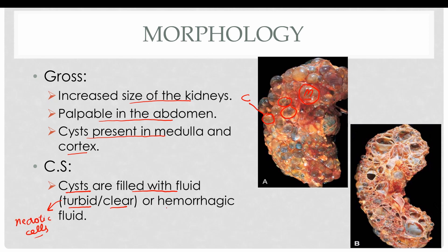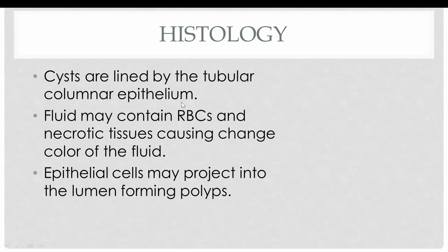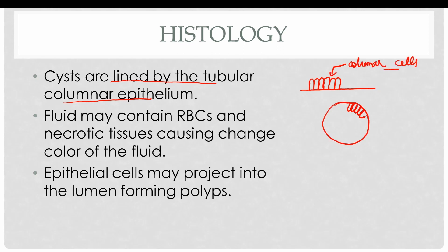Sometimes red blood cells are also present inside the cysts, making the fluid hemorrhagic — meaning tinted with blood. The cut section of the affected kidney shows multiple cysts in both the medullary and cortical regions, along with loss of renal parenchyma resulting in decreased kidney function. Histologically, the cysts are lined by tubular columnar epithelial cells, confirming their origin from the tubular epithelium.